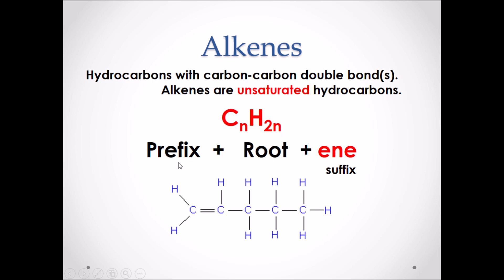Alkenes still follow the same pattern of chemical nomenclature: a prefix, which would be your branches, plus your root, your longest carbon chain. But now the suffix has been changed to E-N-E, representing that there is a double bond in this structure. If we look at the molecule below, its name would be pentene.